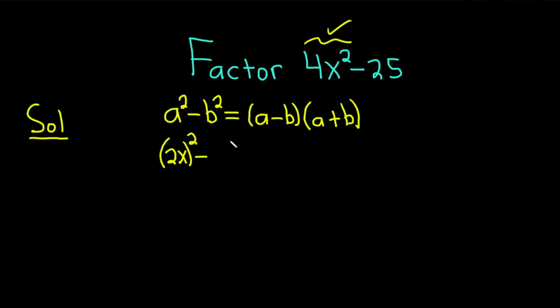Minus, and then we can write 25 as 5². This is equal to - just using the formula - we have a = 2x, so it'll be 2x minus 5, close the parentheses, times, in parentheses, 2x plus 5.